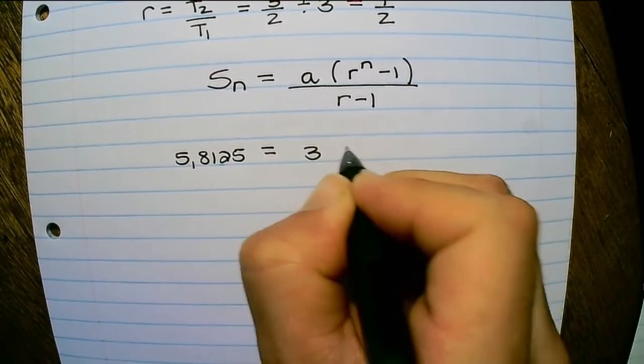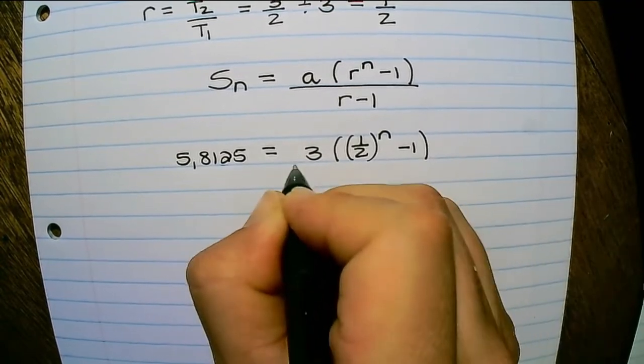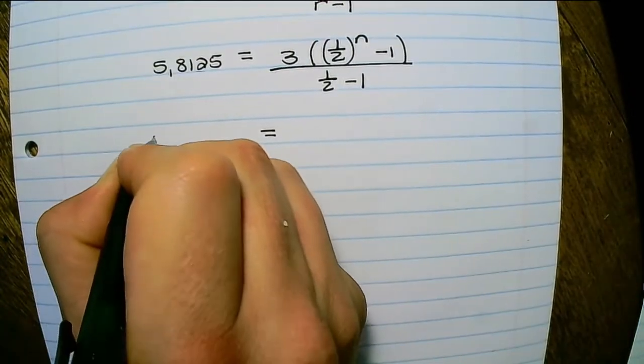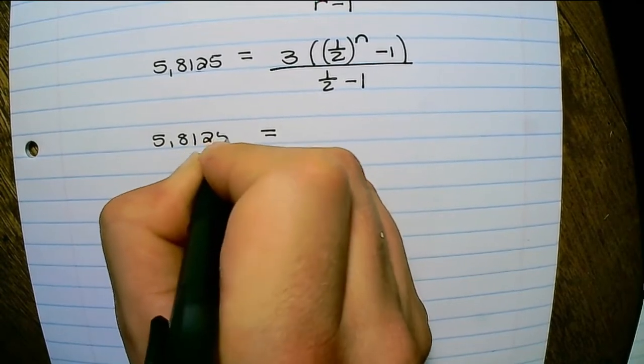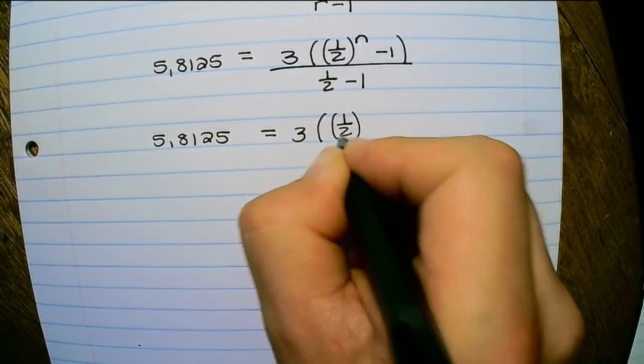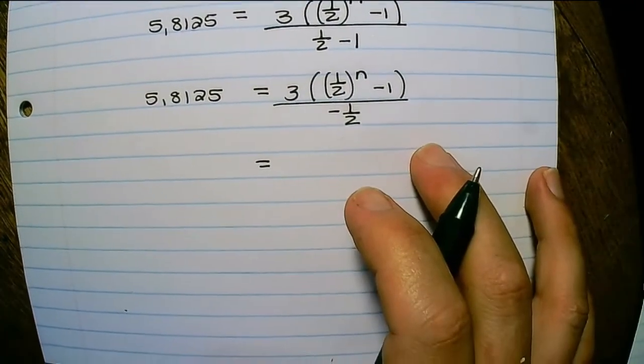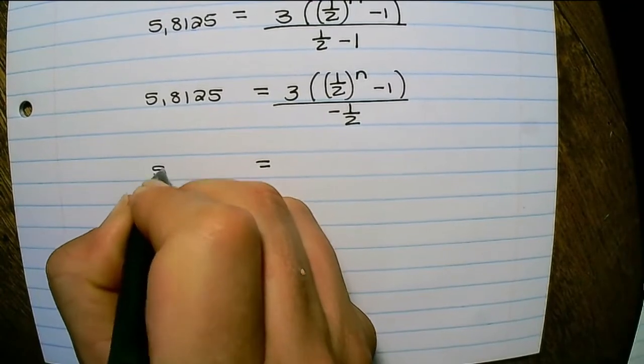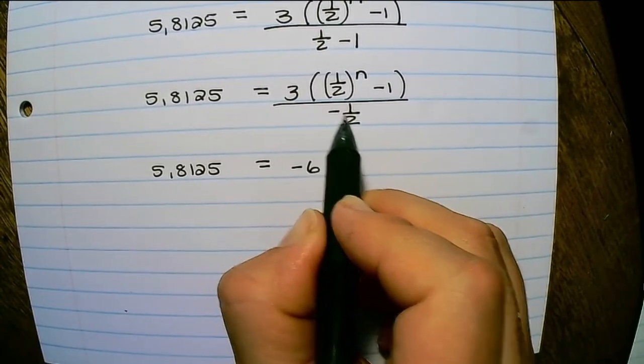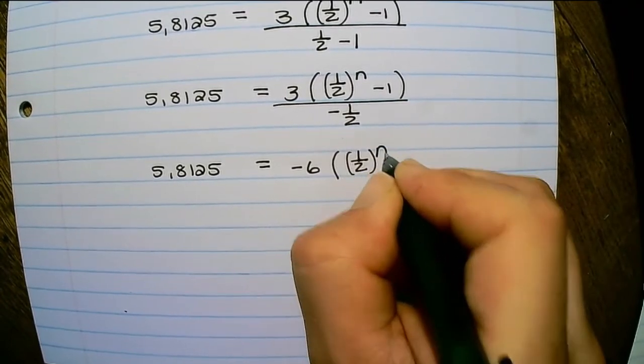The a value is 3, r is a half raised to the power of n minus 1 over a half minus 1. Now if I simplify, I have 5.8125 equals 3 and a half raised to the power of n minus 1 over negative one half. And that can be rewritten as 5.8125 equals negative 6, because 3 divided by negative one half is 6. And I have a half to the power of n minus 1.